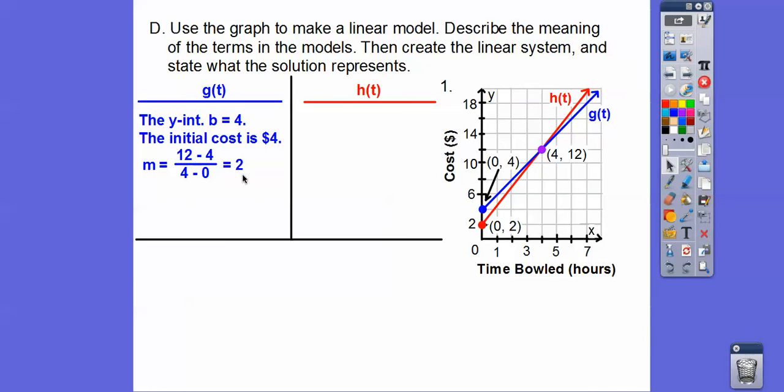Slope is rate of change, which always means per something. So it's going to be cost per hour bowled - two dollars per hour. So remember, y equals mx plus b. In this case, y equals 2x plus 4.